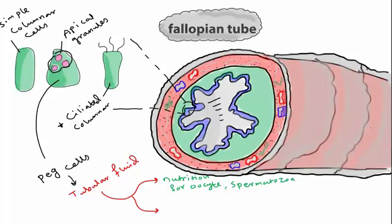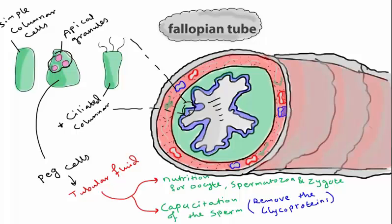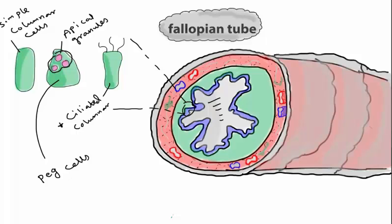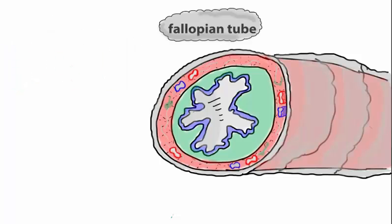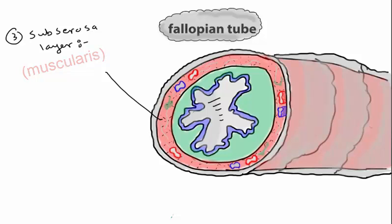The tubular fluid secreted by peg cells has two functions: first, it provides nutrition for the oocyte, spermatozoa, and zygote; second, it facilitates capacitation of the sperm, meaning it removes glycoproteins — essentially the antigens of the sperm — so that no immune reaction is triggered by the sperm. So the three cell types are simple columnar, ciliated columnar, and peg cells.